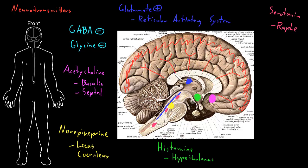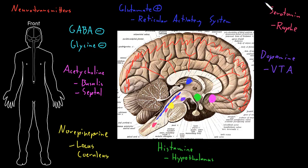Last in this group is dopamine. There's an area in the midbrain called the ventral tegmental area, or VTA, that diffusely projects dopamine onto the cerebral cortex. All of these diffuse projection systems are very important to higher functions of the nervous system like cognition, emotion, and consciousness. Many psychiatric disorders appear to involve dysfunction of these neurotransmitter systems, and many psychoactive medications appear to influence neurotransmitter release from these diffuse projection systems to the cerebral cortex.